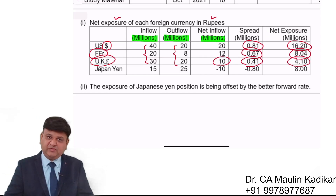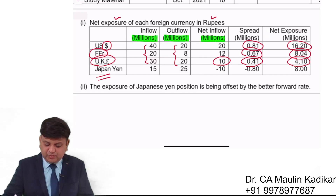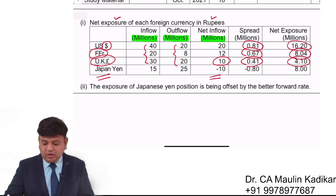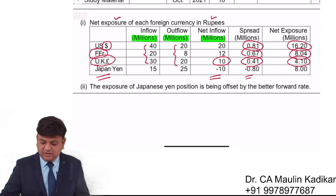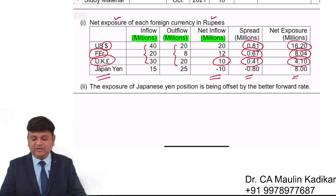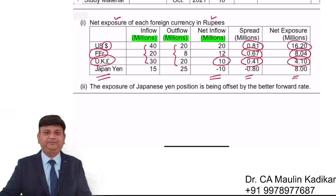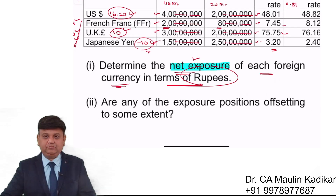For Japanese Yen, we have to make a payment. The rupee currency is appreciating, and we can say that the Japanese currency is depreciating. So we also get an advantage there.